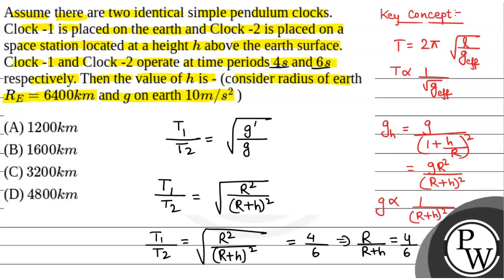Solving this: 6r = 4r + 4h, so h = r/2. Since r is 6400 kilometers, h will be equal to 3200 kilometers.